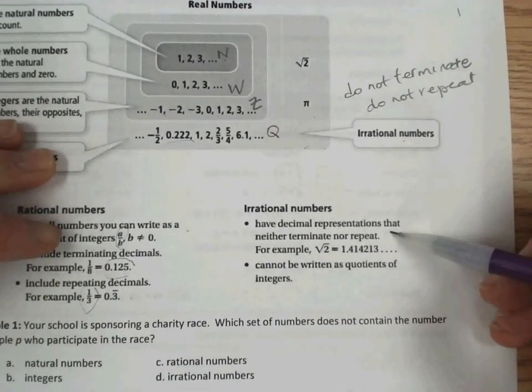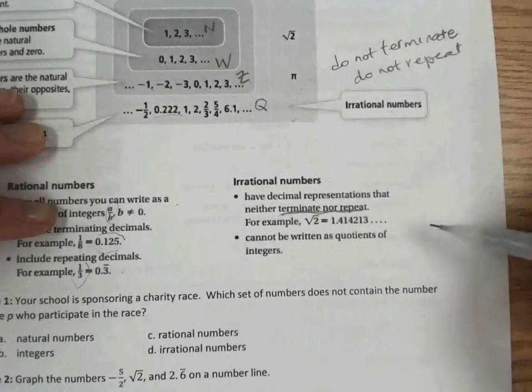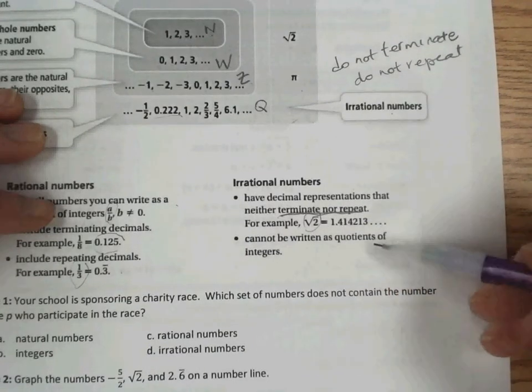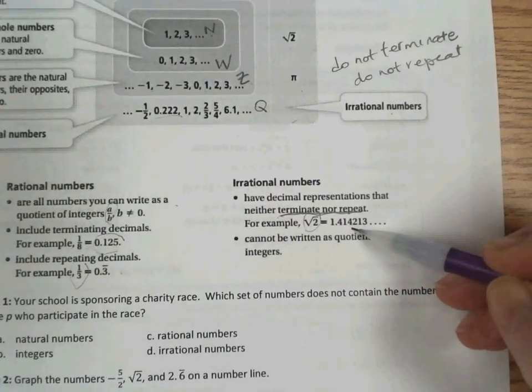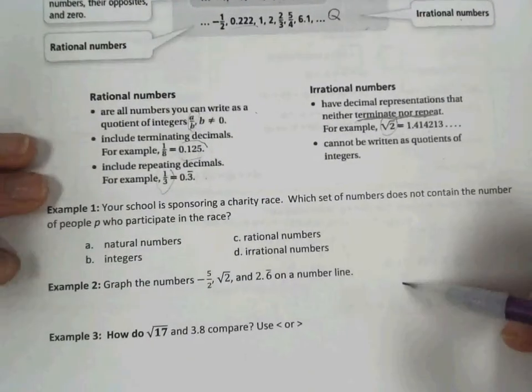For irrational numbers, they have decimal representations that neither terminate nor repeat. So there that is again. For example, the square root of 2. The square root of any number that is not a perfect square will lead to an irrational number. And they cannot be written as a quotient of integers.